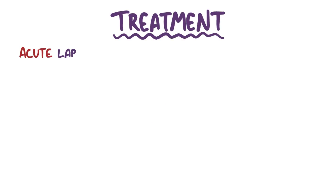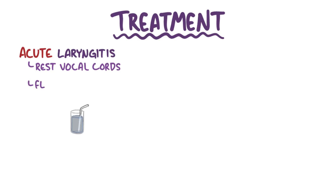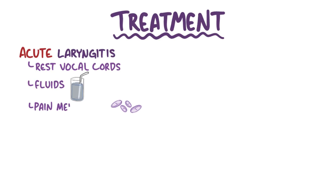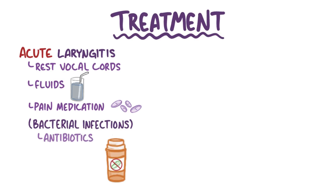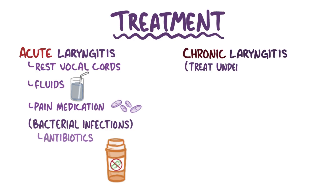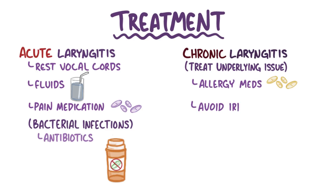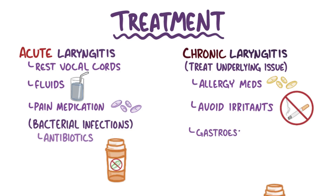Generally speaking, for acute laryngitis, the treatment is resting the vocal cords, as well as getting fluids and pain medications. For bacterial infections, antibiotics can be helpful. For chronic laryngitis, it's important to treat the underlying issue — for example, using allergy medication, avoiding irritating agents, and using gastroesophageal reflux medications.